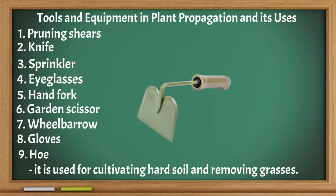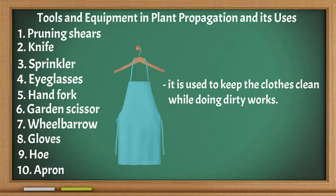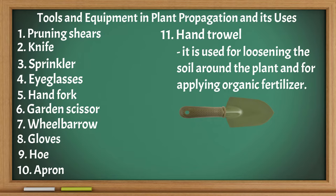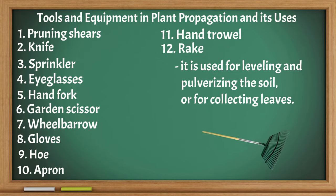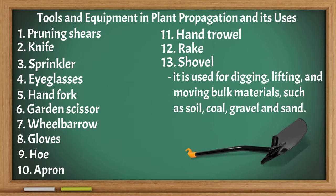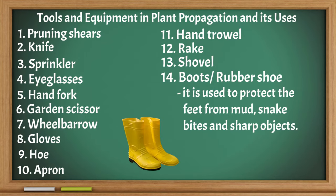Hoe — used for cultivating hard soil and removing grasses. Apron — used to keep clothes clean while doing dirty work. Hand trowel — used for loosening soil and applying organic fertilizer. Rake — used for leveling and pulverizing soil or for collecting leaves. Shovel — used for digging, lifting, and moving bulk materials such as soil, coal, gravel, and sand. Boots or rubber shoes — used to protect the feet from mud, snake bites, and sharp objects.